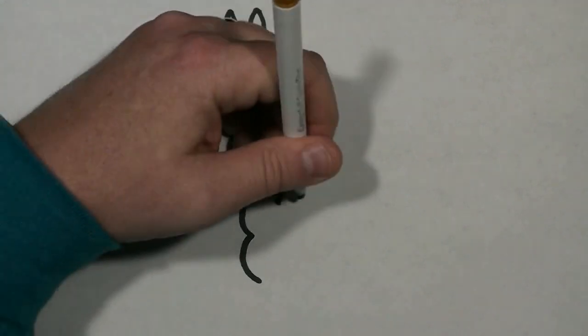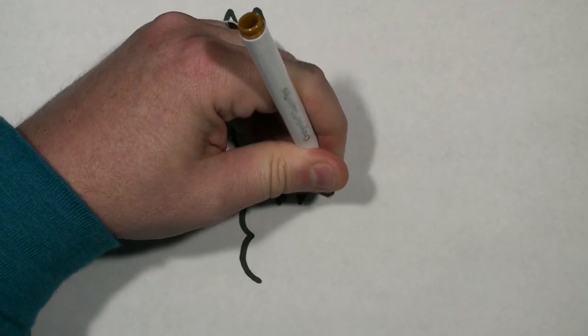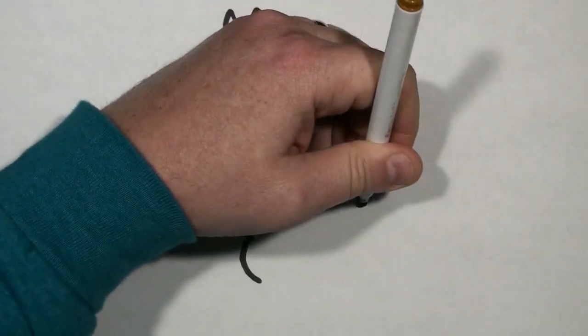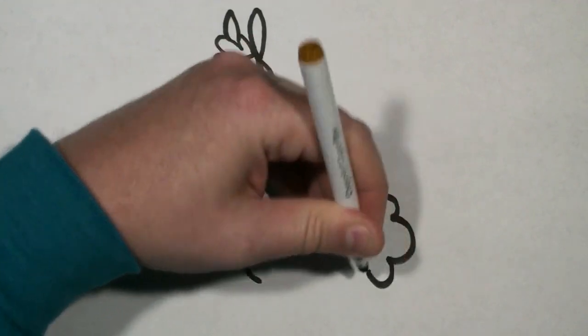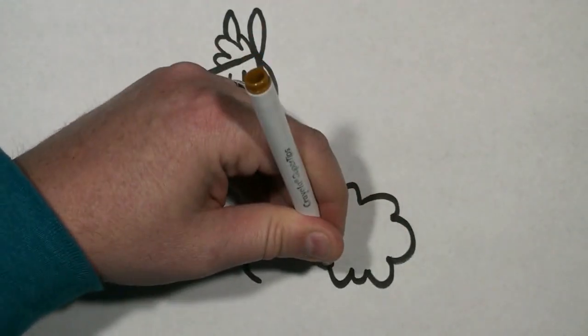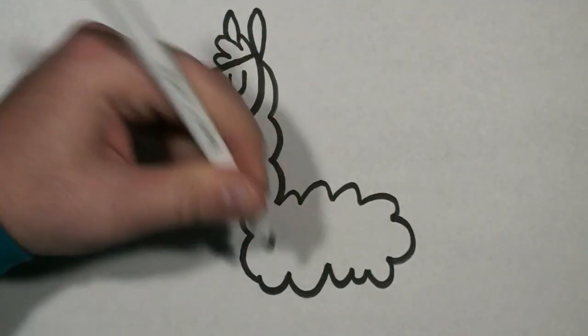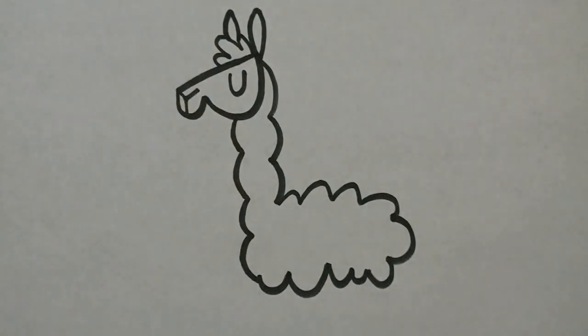To draw the body I'm just going to keep making various size bumps kind of in a circle that goes all the way around and goes back to that neck bump.